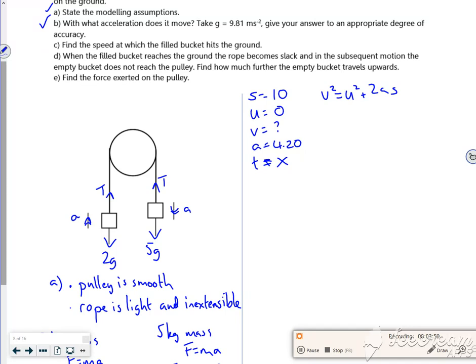So if I put that in, v squared is 0 squared plus 2 lots of 4.2 times 10. So v squared is 84.1, v is 9.17 meters per second to 3 sig figs.